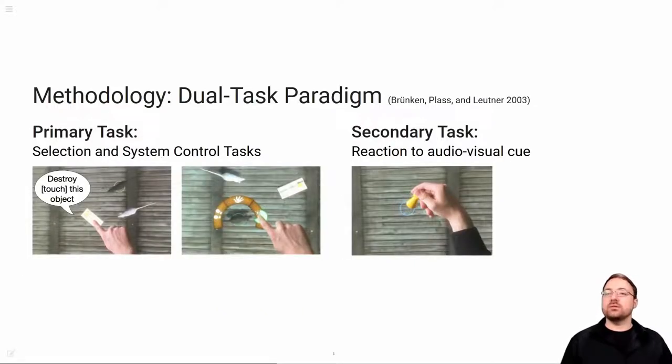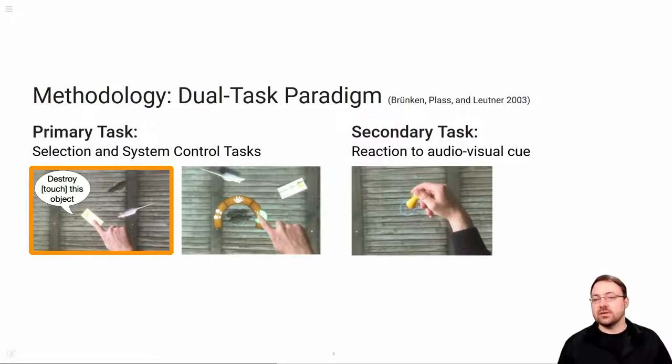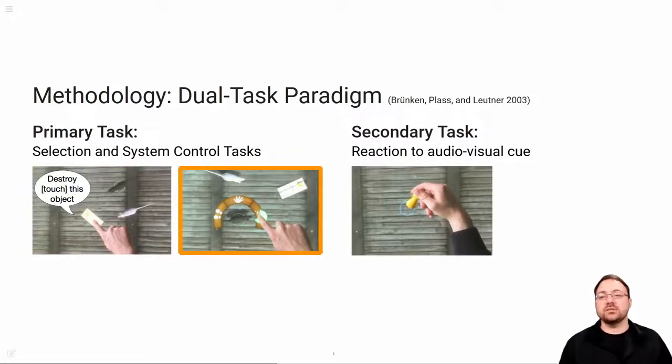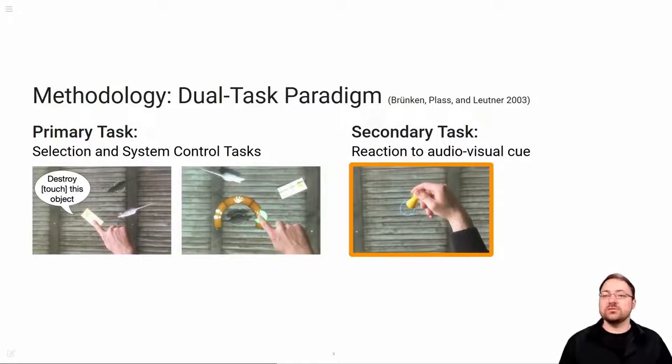We used the dual-task paradigm to objectively assess cognitive load, since it is a well-established tool in psychology. A user has to perform a primary and a secondary task in parallel. In our primary task, the user has to command two virtual agents represented as mice to perform certain actions. We implemented a fully functional speech and touch interface depicted on the left, and a touch-only menu-based interface depicted in the middle. In the secondary task, the user has to move a tangible playing piece to a given target position as a reaction to an audiovisual cue. If different versions of a primary task generate different levels of cognitive loads, this is reflected in the performance of the secondary task. The higher the cognitive load from the primary task, the worse the performance on the secondary task.